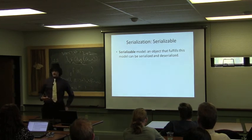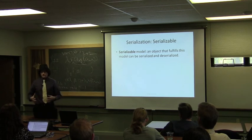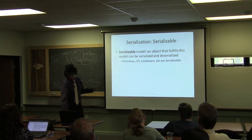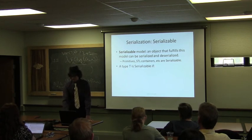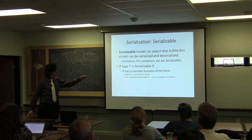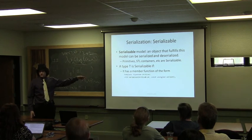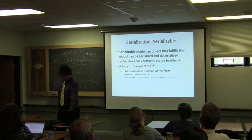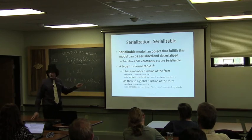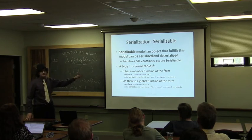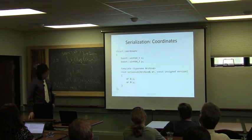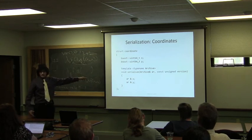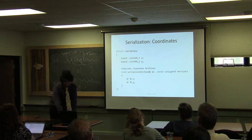The serializable model is the concept that classes must fulfill to be used with serialization. All primitive types and STL containers are supported. A type T is serializable if it has a member template function taking an archive and the version of the data structure as arguments. There's also a non-intrusive version using a global function. Here's a simple class called coordinate with an X and Y — the serialization implementation is very simple: just write ar & x and ar & y.